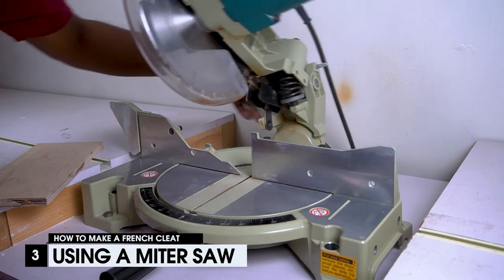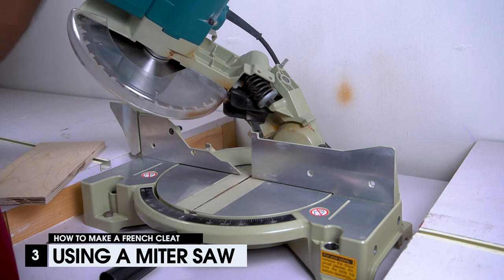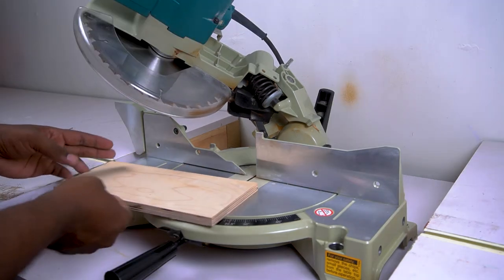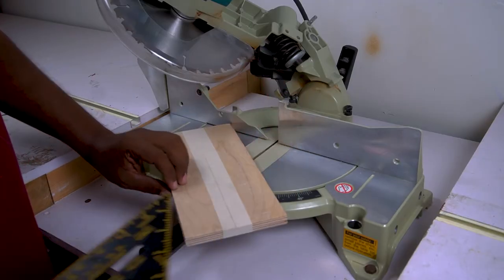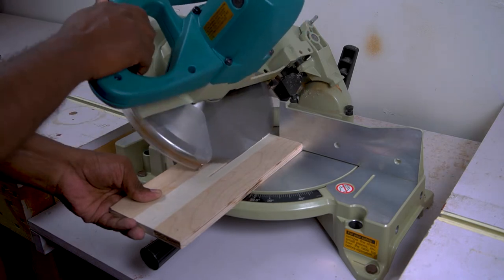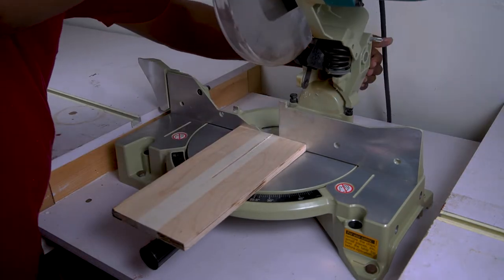The next method is by using a miter saw. Adjust the miter saw blade to a 45 degree angle. Begin by placing the wood on the bed of the miter saw. Draw the cut lines using a speed square and pencil. I made the 45 degree cut lengthwise first.